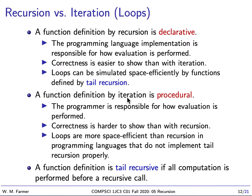This is a good time to talk about the difference between recursion and iteration. Iteration is basically using loops. A function definition by recursion is declarative — our definition just describes what the function is. It doesn't describe how we're going to evaluate it. It's really up to the programming language implementation to evaluate it, so the programmer only worries about defining the function.